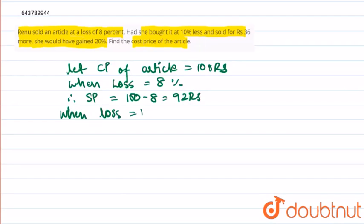When there was a loss equal to 10 percent, the selling price of the article is 100 minus 10 equal to 90 rupees. If she would have gained a profit of 20 percent,